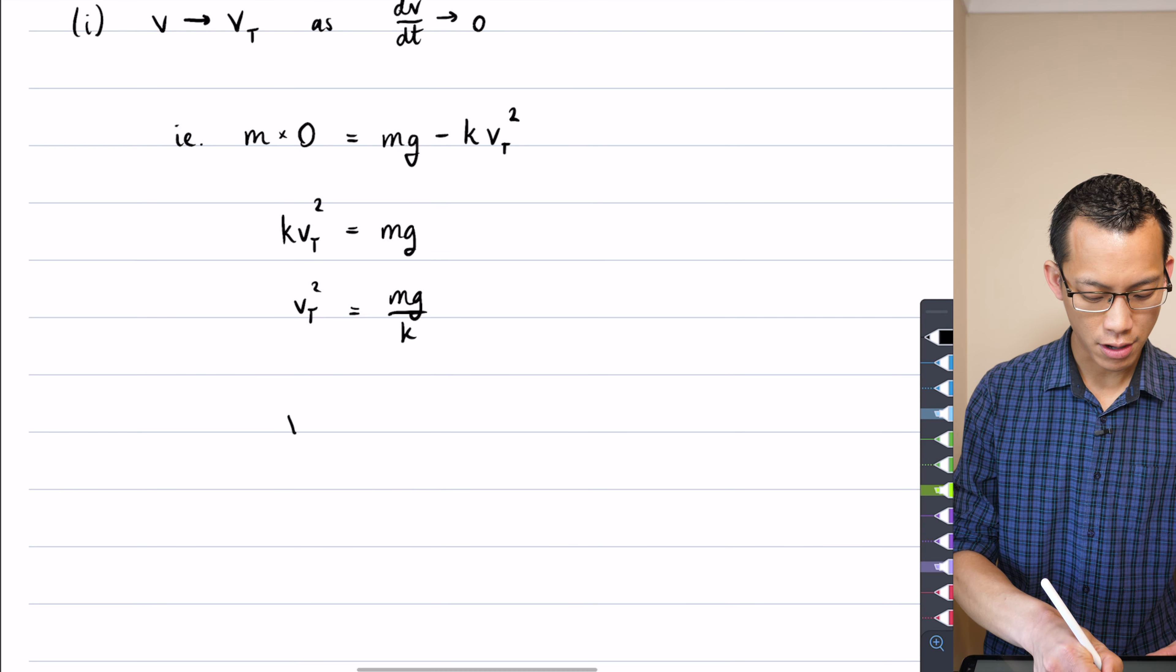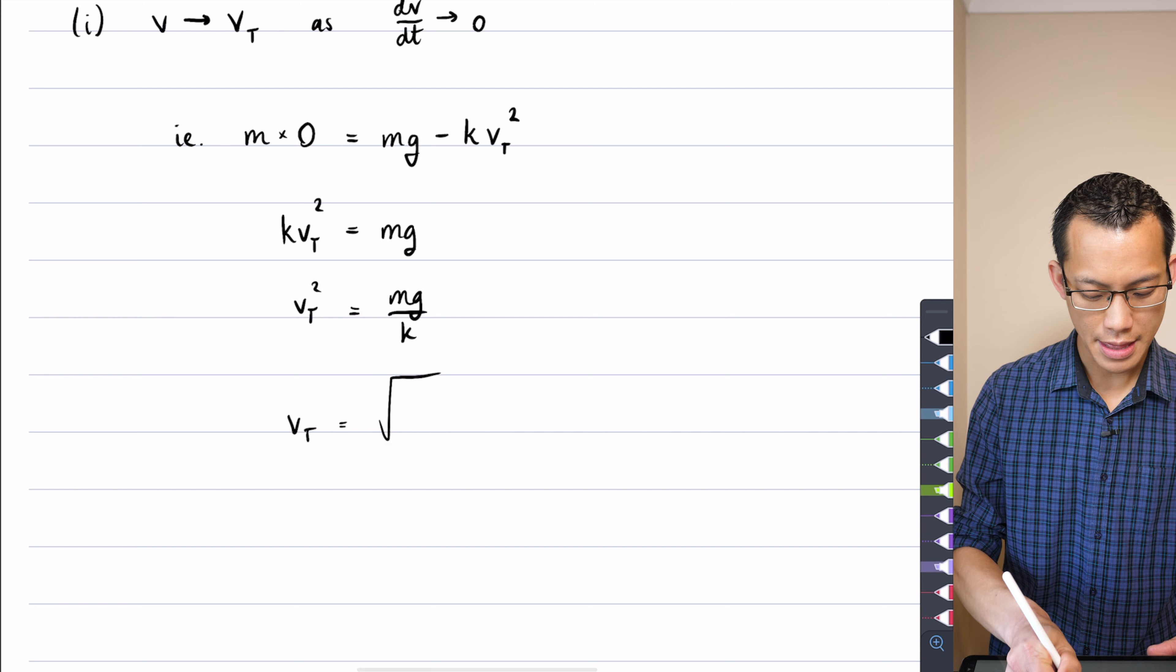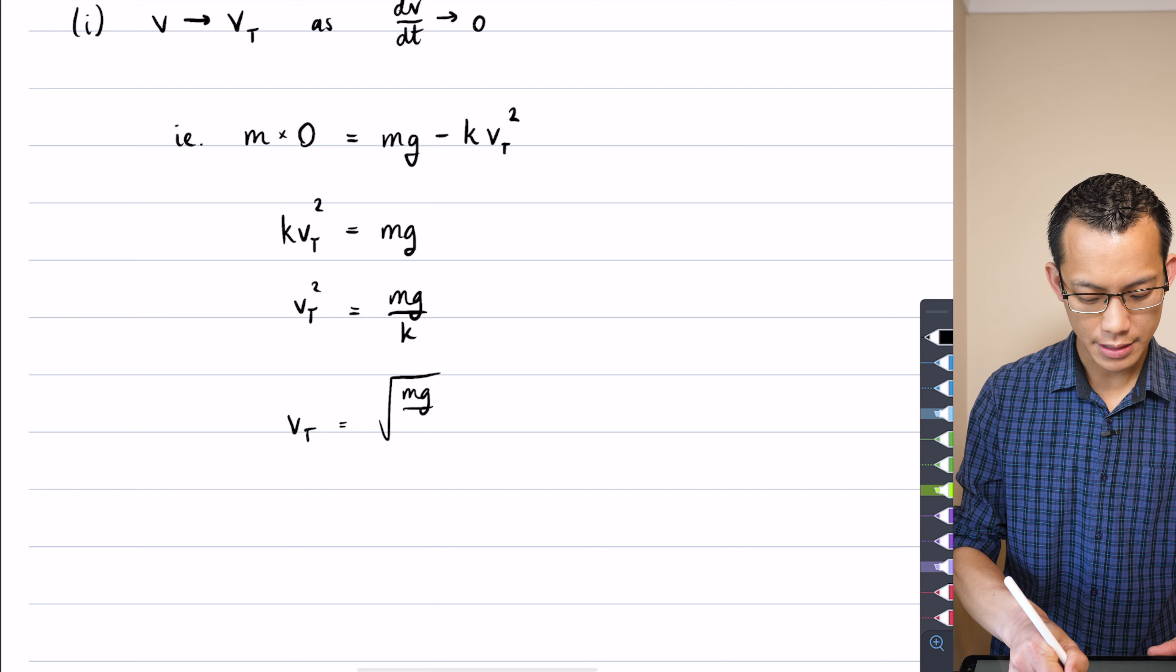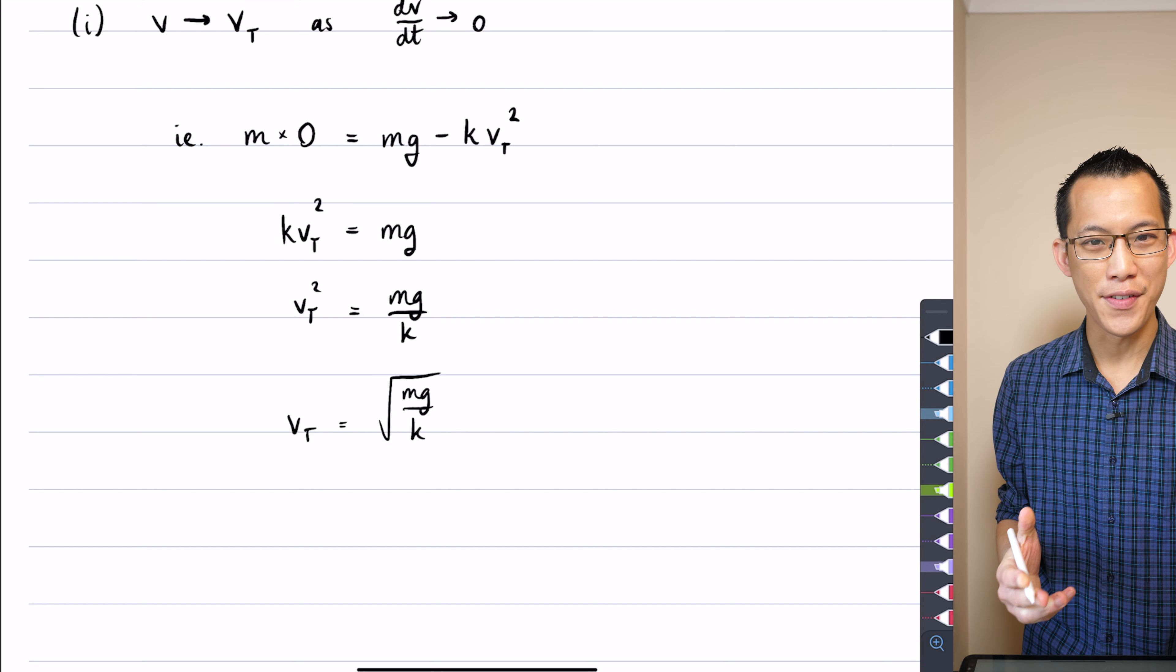Now I just need to take the square root. So I'll say VT is equal to that square root right there. And I mean, I've gotten so far without using any words except the word as.